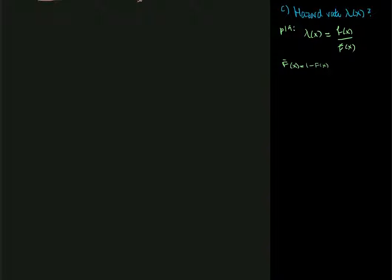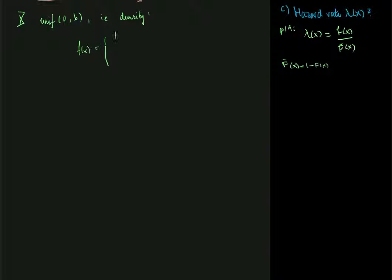In part c of problem 208, we want to calculate the hazard rate of x. We have a stochastic variable x which is uniformly distributed on 0 to b. That means it has density f equal to 1 over b if x lies between 0 and b, and 0 otherwise.